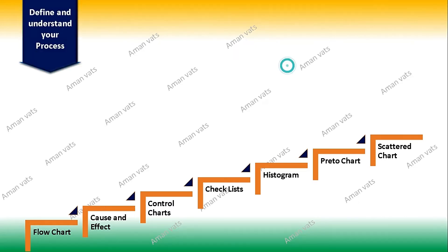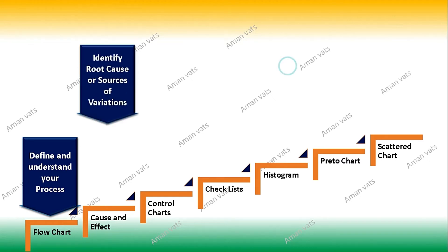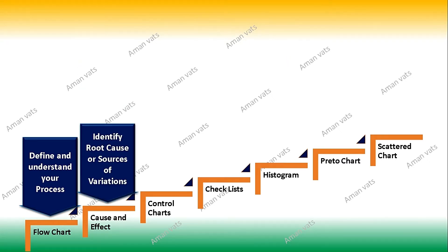Let me tell you the objective of each tool independently. For example, the flow chart is used to define and understand your process — unless your process is known and clear to you, it is difficult to direct your teams. The cause and effect diagram helps you to identify the root cause or source of variations.